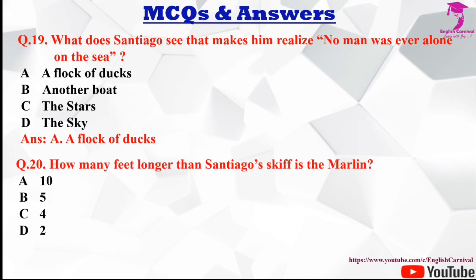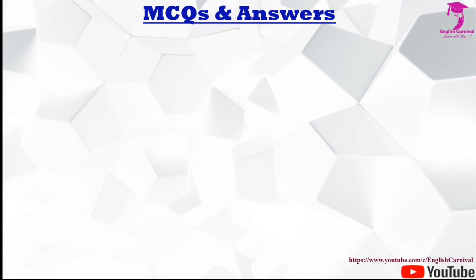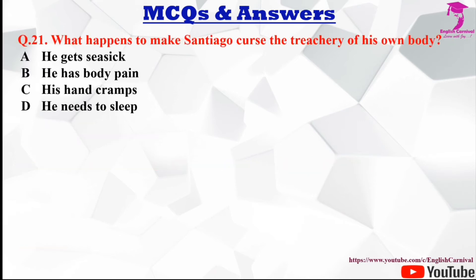Question number twenty: How many feet longer than Santiago's skiff is the marlin? Options are A 10, B 5, C 4, and D 2. The correct answer is D, two feet.